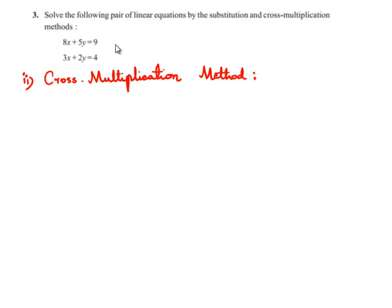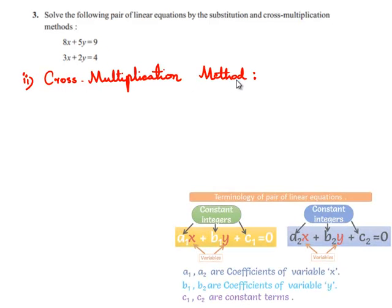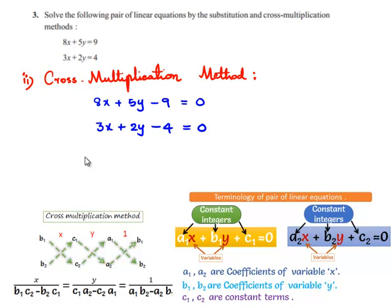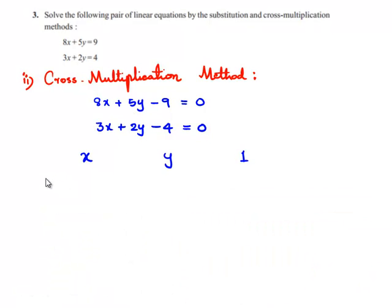Now let us find the solution by cross multiplication method. The given equations can be written as 8x plus 5y minus 9 is equal to 0, and 3x plus 2y minus 4 is equal to 0. To apply the cross multiplication method, we draw a diagram: write x, y, and 1. For the first equation write the coefficient of y which is 5, and the second equation coefficient of y which is 2. Next the constant terms minus 9 and minus 4. Then the coefficients of x, 8 and 3, and again the coefficients of y, 5 and 2.